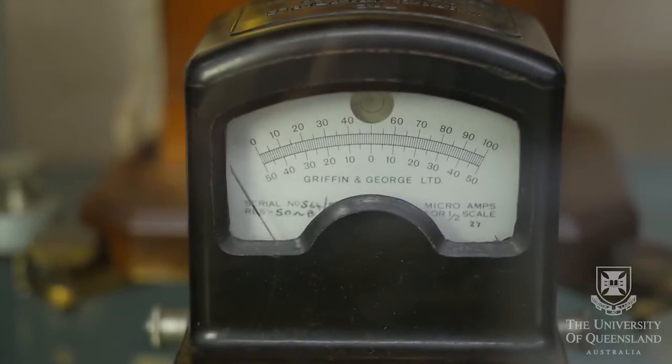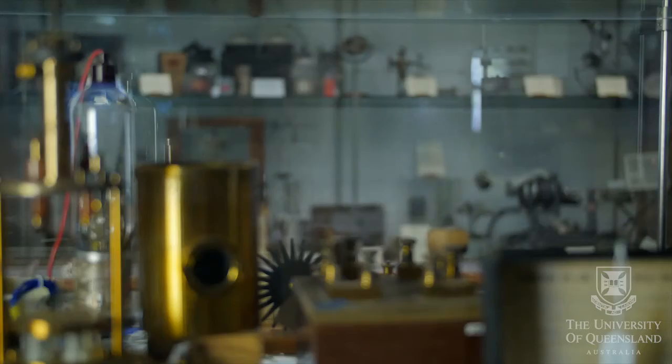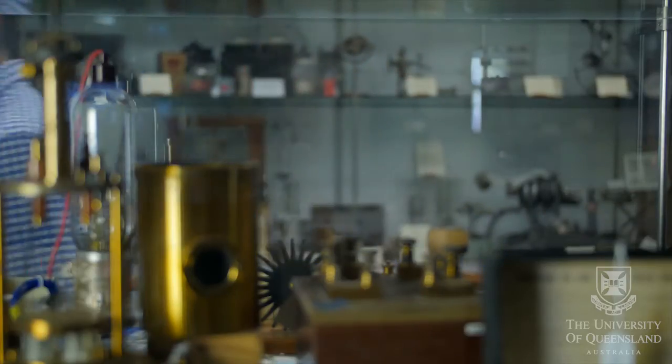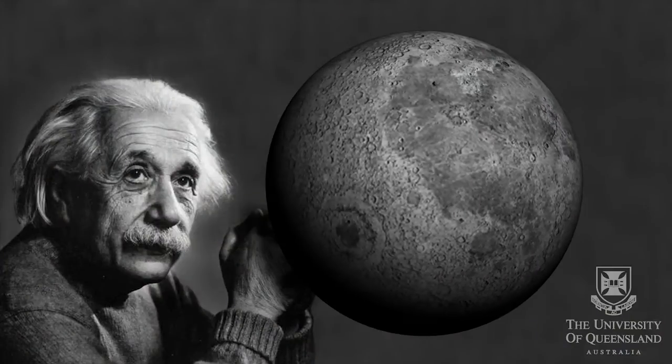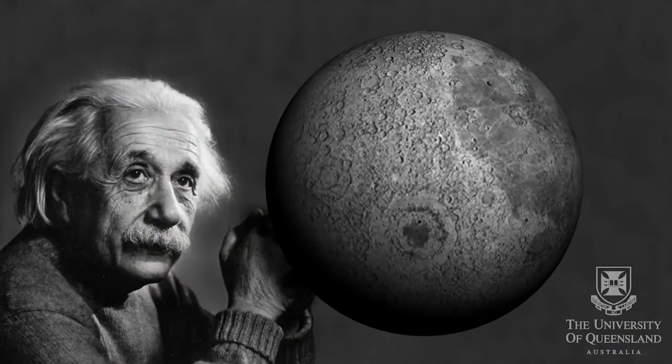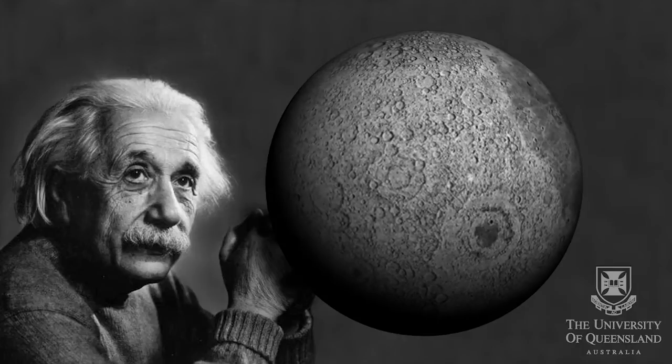Quantum mechanics had some radical implications. For example, that objects may not have well-defined properties before we measure them. Albert Einstein was troubled by this and famously asked, do you really believe the Moon exists only when you look at it?